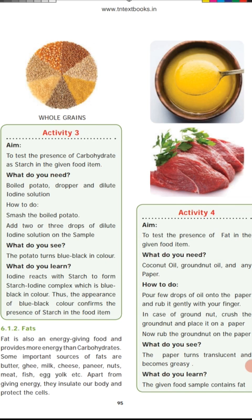Activity 4 is given in your book — this is the test for presence of fat. Take coconut oil, groundnut oil, and any paper. Pour a few drops of oil on the paper and rub it gently with your finger. For groundnut, crush it and place it on the paper, then rub it. You will observe the paper turns translucent, which confirms the given food sample contains fats.